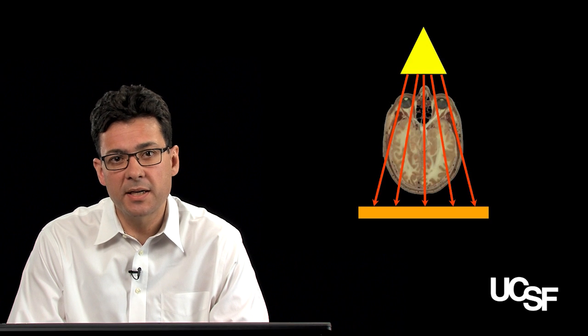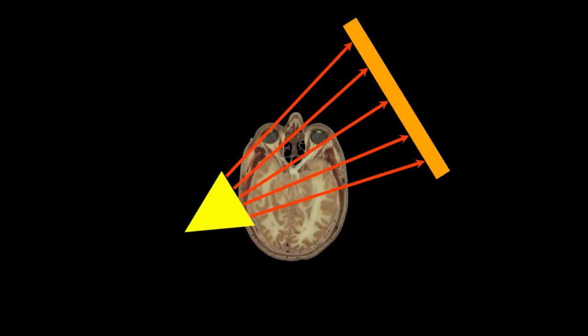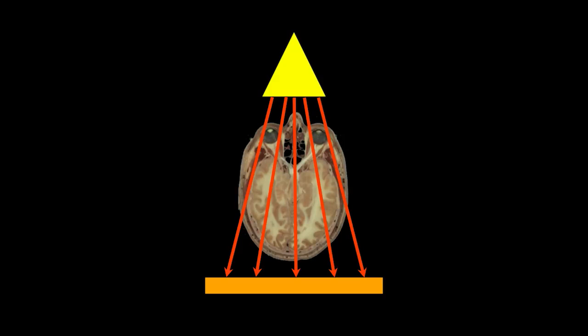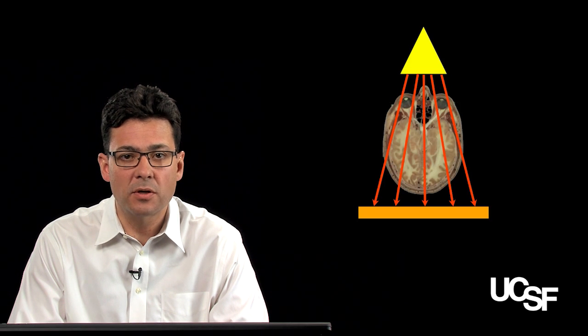CT uses a similar mechanism. You can see the X-ray generator source at the top of the image. X-rays are passed through the patient — in this case showing a slice through the head — onto a detector plate. Instead of obtaining a single projection like a hand X-ray, in CT the detector and source are rotated around the patient multiple times, and these individual projections are mathematically combined to create a two-dimensional image.